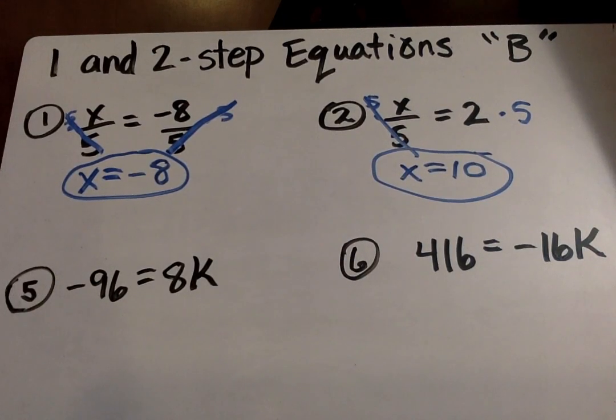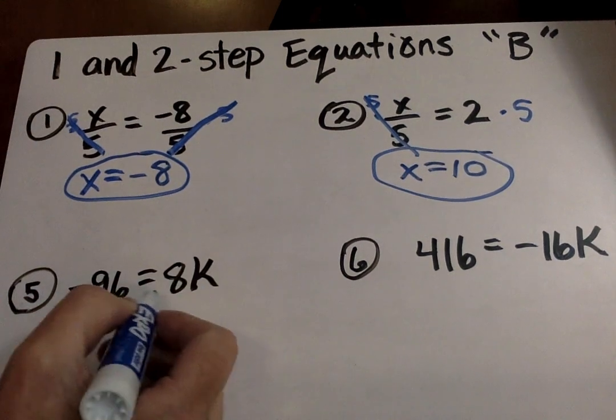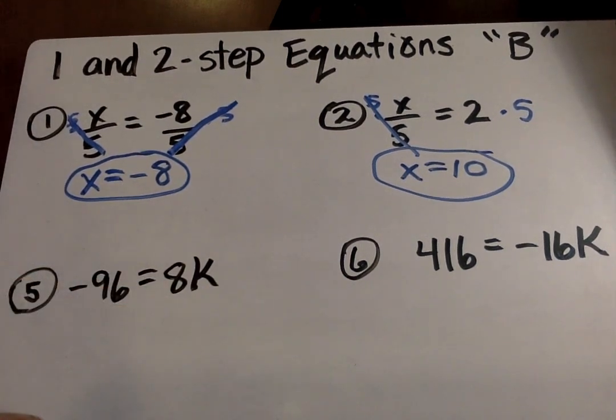Then I'm going to jump down to number five. And because you can do three and four on your own, I can also pause the video while you work on those two. Or we can just jump to number five. Here's the variable. Eight times K equals negative 96.